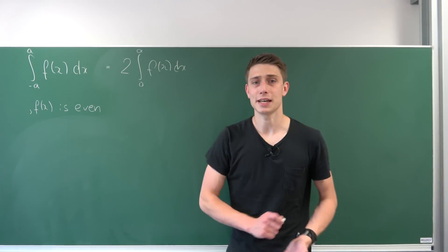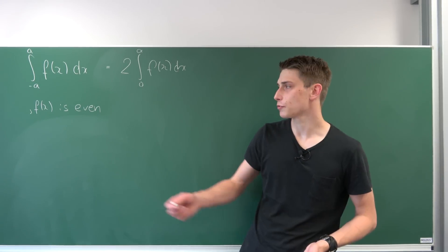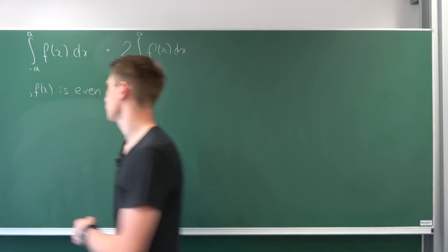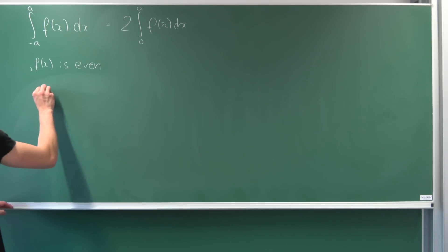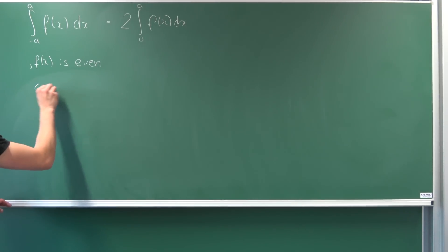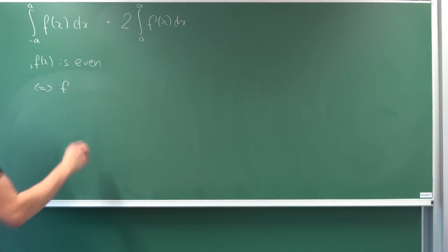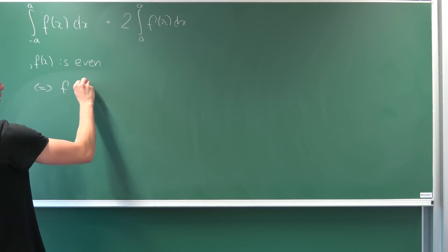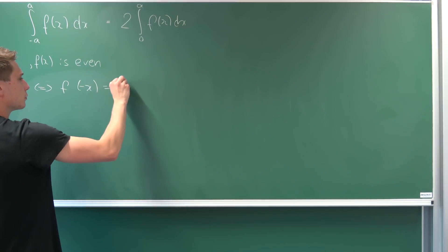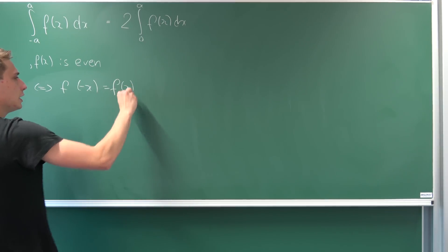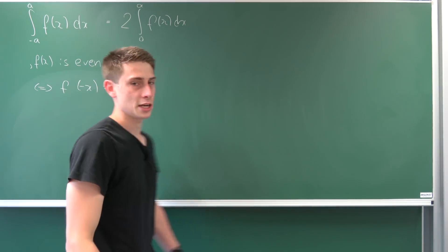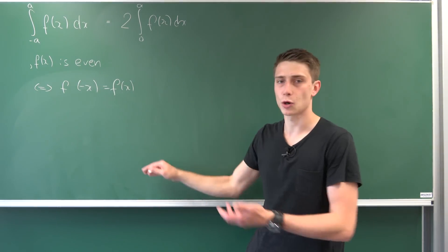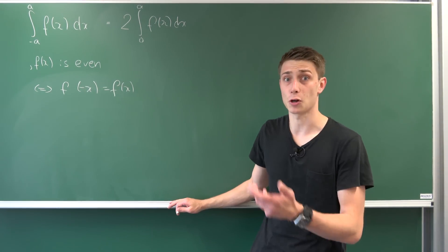You might ask yourself what it means when a function is even. Well, all that really means is that if we plug a negative argument into this function — so f of minus x — we end up with the function itself, f of x. You might know some functions with this property, for example the cosine.